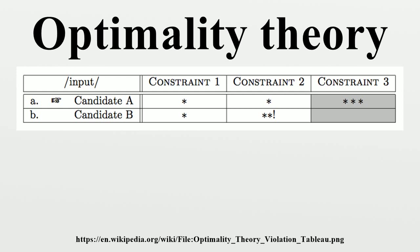Given two candidates A and B, A is better than B on a constraint if A incurs fewer violations than B. Candidate A is better than B on an entire constraint hierarchy if A incurs fewer violations of the highest-ranked constraint distinguishing A and B. A is optimal in its candidate set if it is better on the constraint hierarchy than all other candidates. For example, given constraints C1, C2, and C3, where C1 dominates C2, which dominates C3, A is optimal if it does better than B on the highest-ranking constraint assigning them a different number of violations. If A and B tie on C1 but A does better than B on C2, A is optimal, even if A has 100 more violations of C3 than B.